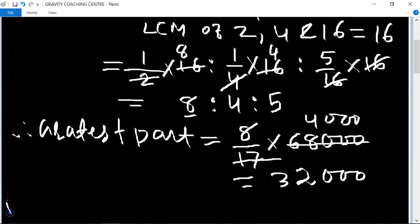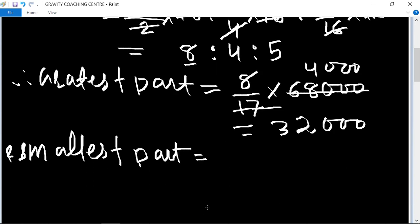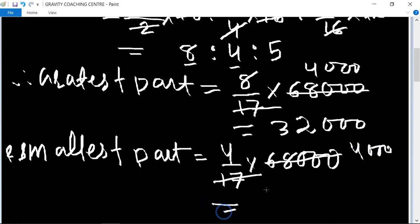And the smallest part equal to 4 upon 17 multiply 68000, cancel by 17, 4 thousand equal to 16000.